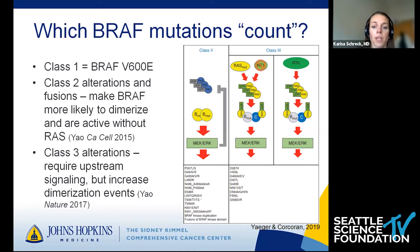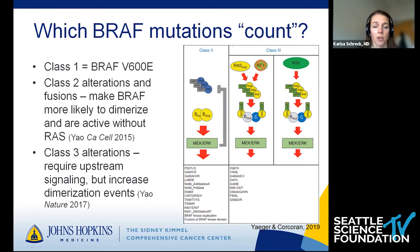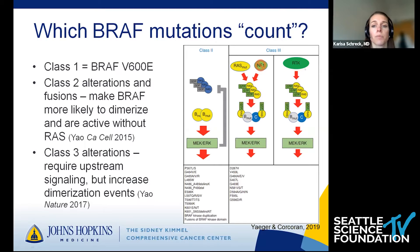Class 2 BRAF alterations include fusions of the BRAF kinase domain, which are the BRAF fusions we think about in pilocytic astrocytomas. Class 3 alterations are dependent on dimerization but also need activation of upstream RAS — either through a RAS mutation, not very common in glioma, or through loss of NF1, which is very common in neurofibromatosis and also common in glioblastoma generally. These BRAF mutants cause BRAF and CRAF molecules to stay bound together longer so that activation can continue downstream.